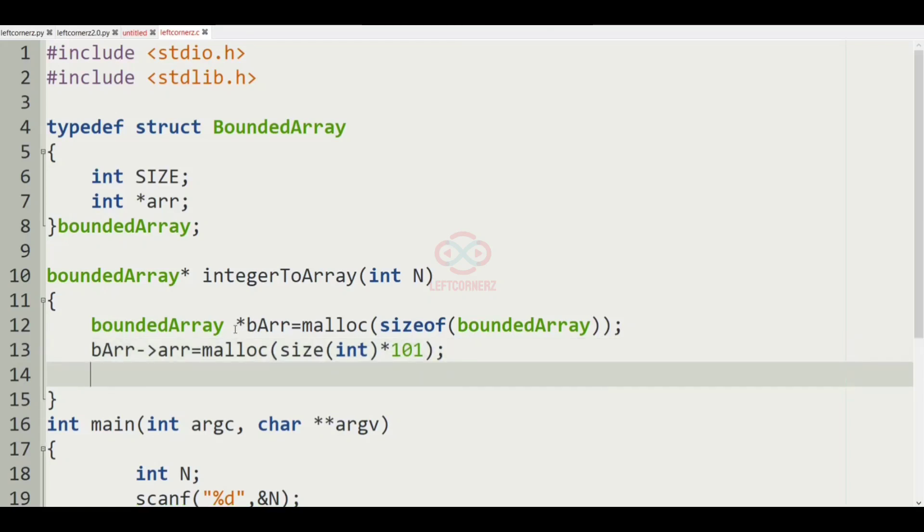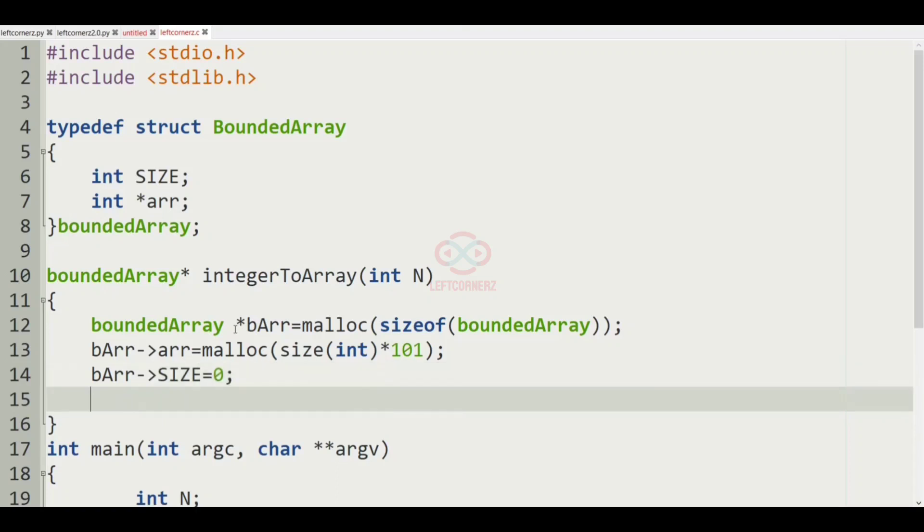So after this we'll have bArr->SIZE equal to 0.